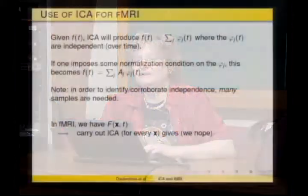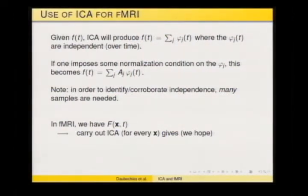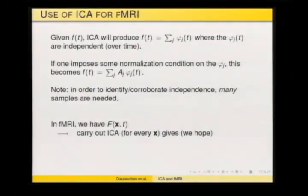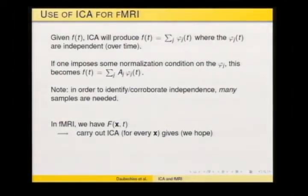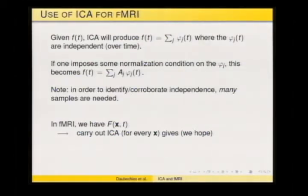If you have a function of time, ICA will produce — if you tell it how many components to find — independent components of time, normalized into a linear combination. You can write it as a linear combination of normalized independent components. You need many, many samples in order to be able to do that.